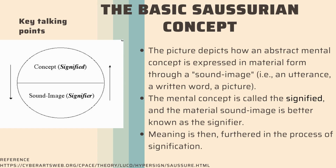Here are the basic Saussurean concepts. The picture here depicts how an abstract mental concept is expressed in material form or through a sound image. A sound image can be an utterance, a written word, or even a picture. The mental concept is called the signified, and the material sound image is known as the signifier. Meaning is then produced through the process of signification.